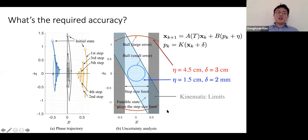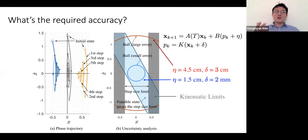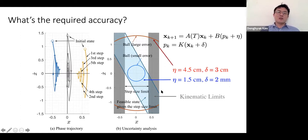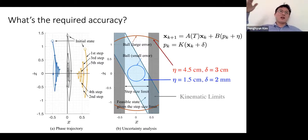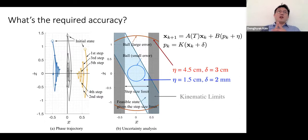The orange circle is actually larger than the blue region, which means all kinematically feasible states are uncertain — you cannot guarantee stability. So how much accuracy is needed to make the uncertain region well-bounded within the feasible state? It turns out 1.45 centimeter error in landing location and 2 millimeter error in estimation are required — amazingly high accuracy. For a 1.3-meter robot with legs nearly a meter long when straight, 1.5 centimeters corresponds to only 0.01 radian error at the hip joint.